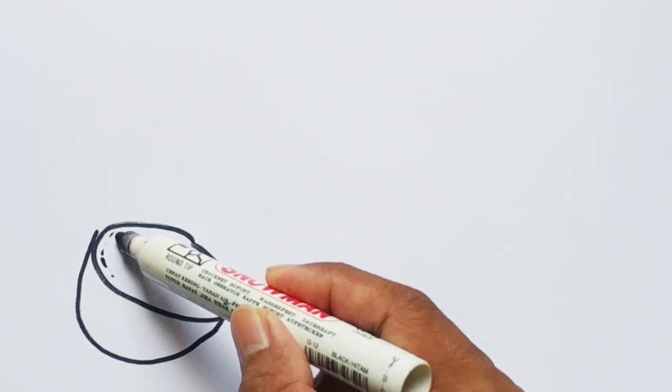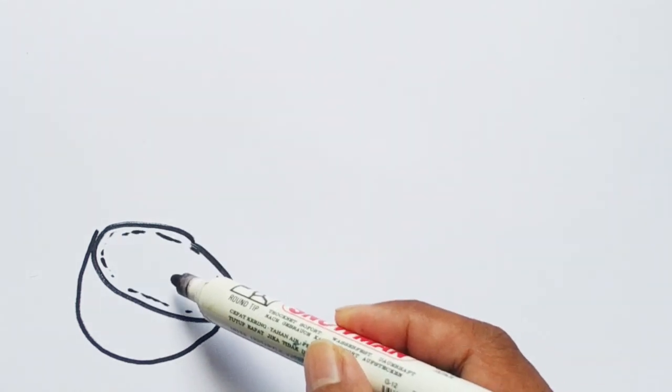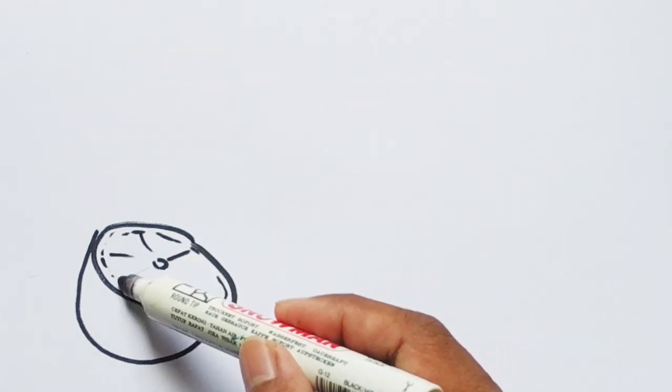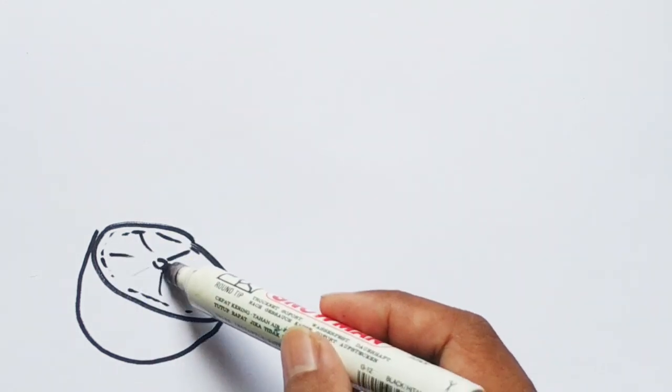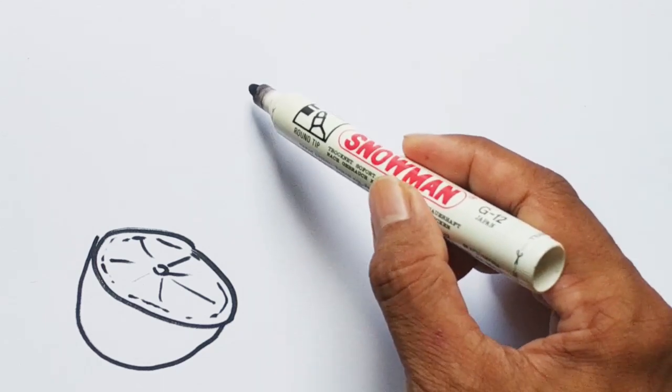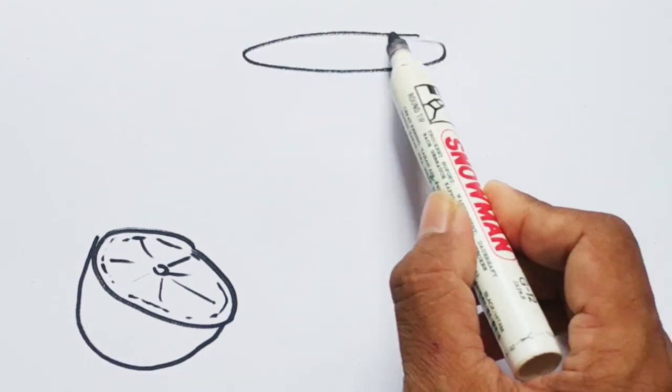I want to do something here so I'll use pencil. If you think the line is not okay you can erase it. You see what it is now? It's actually a glass. I'm starting with the outline here.